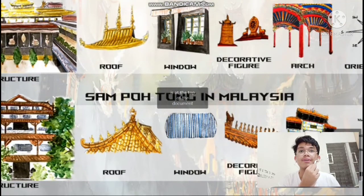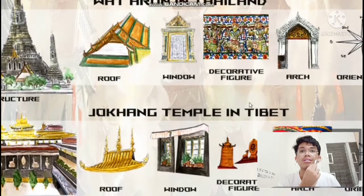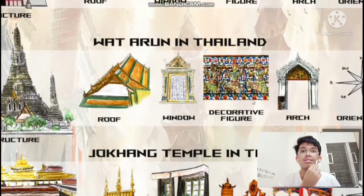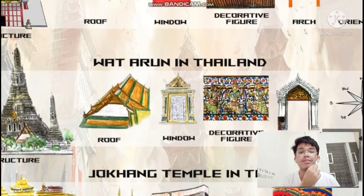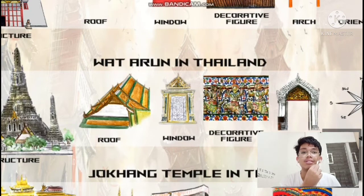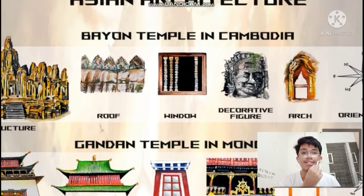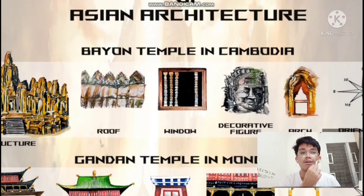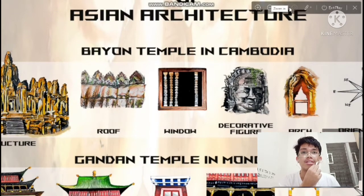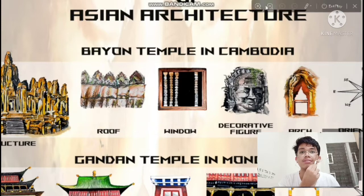The decorative figures in Wat Arun — the walls are decorated with many intricate murals. The decorative figures in Bayon Temple are stone carvings of faces, with over 200 faces carved in the towers and the walls.